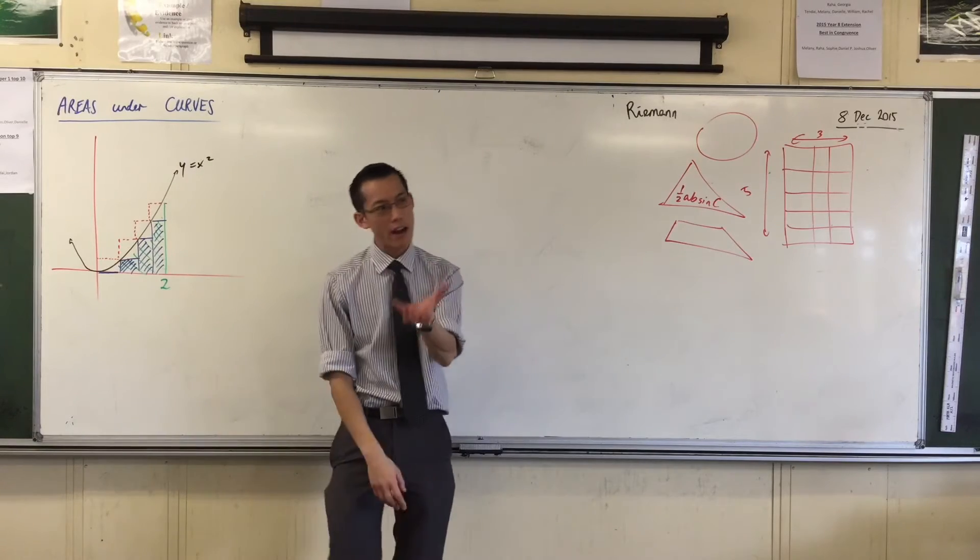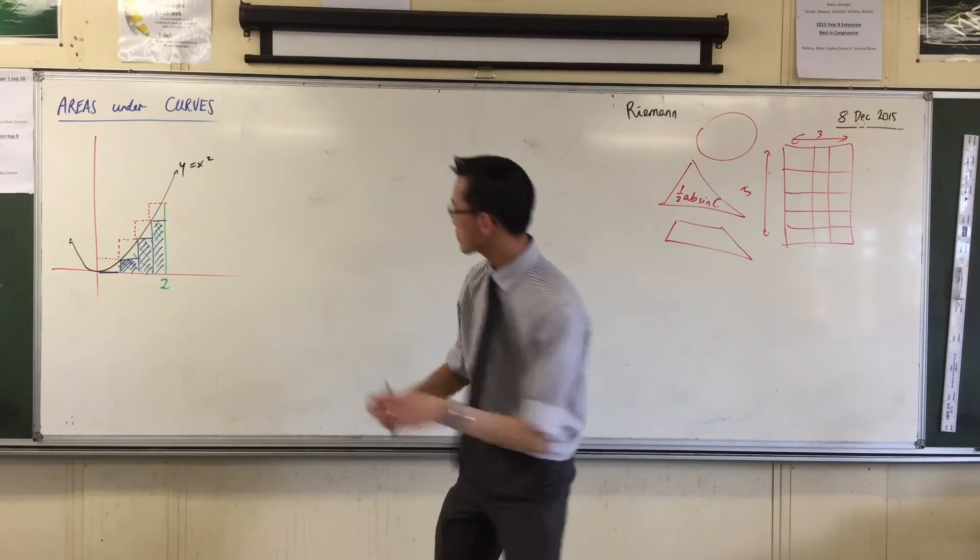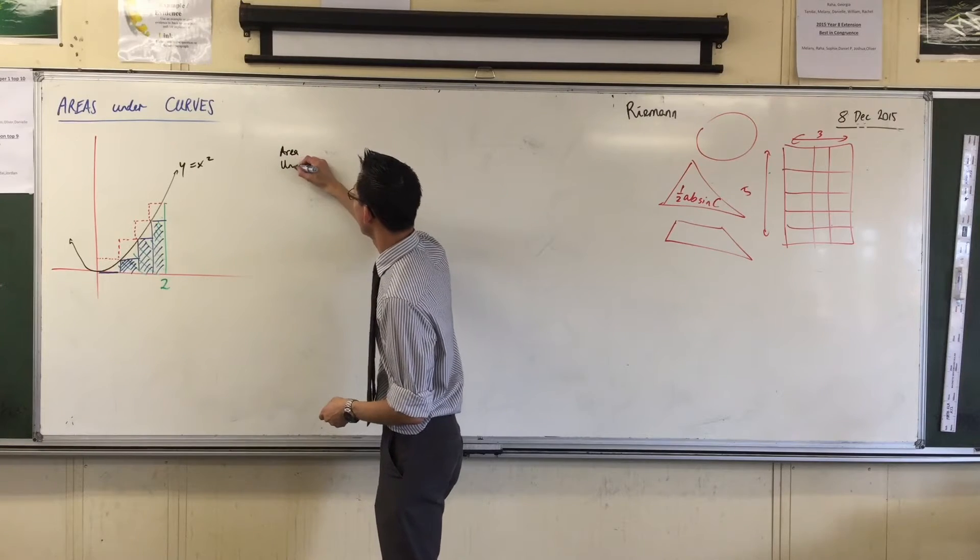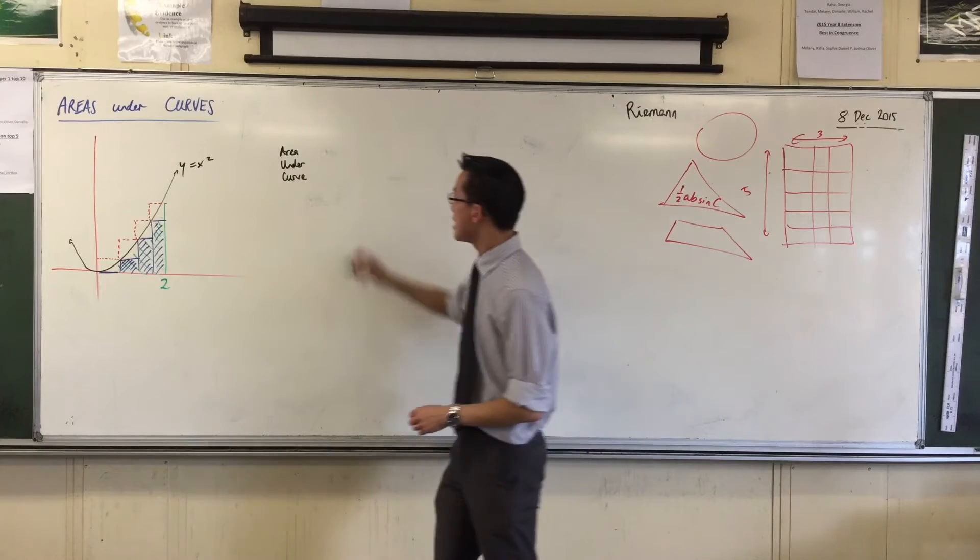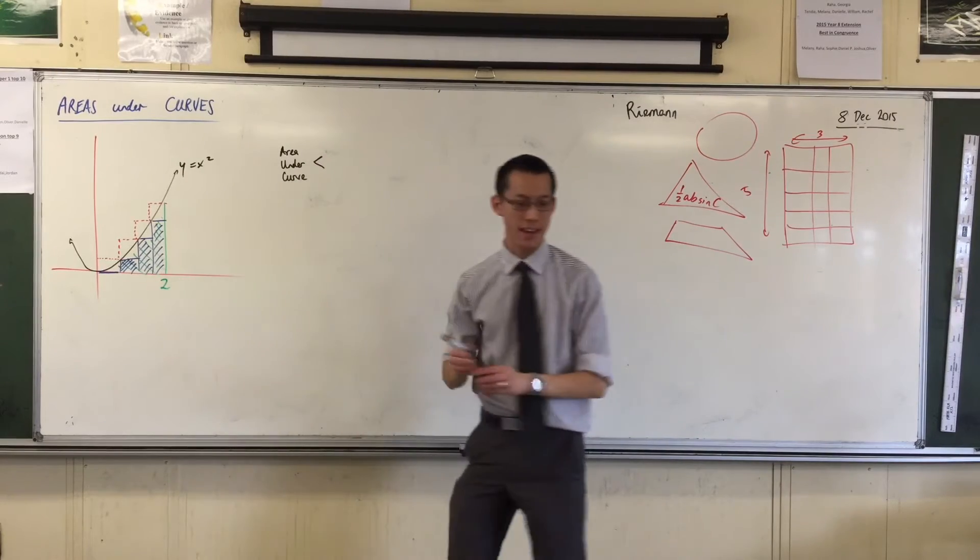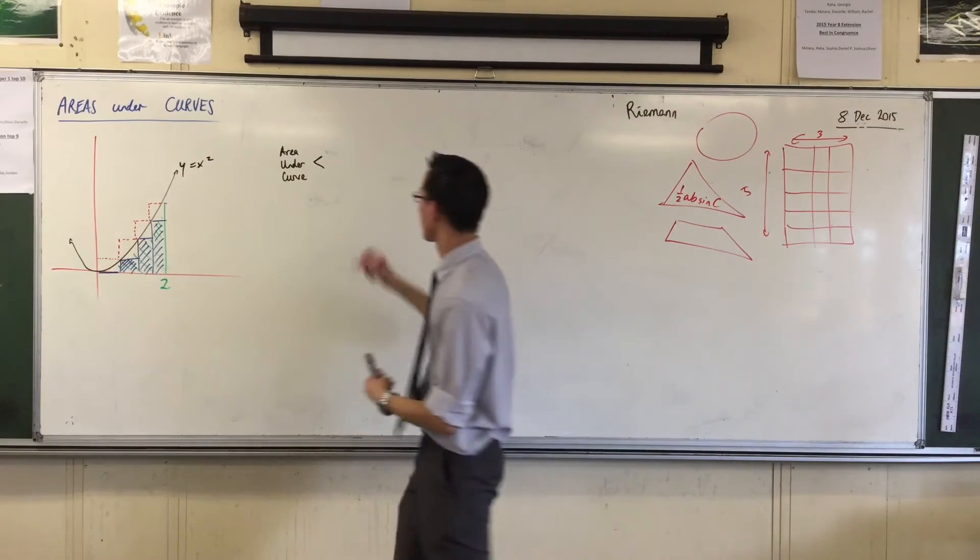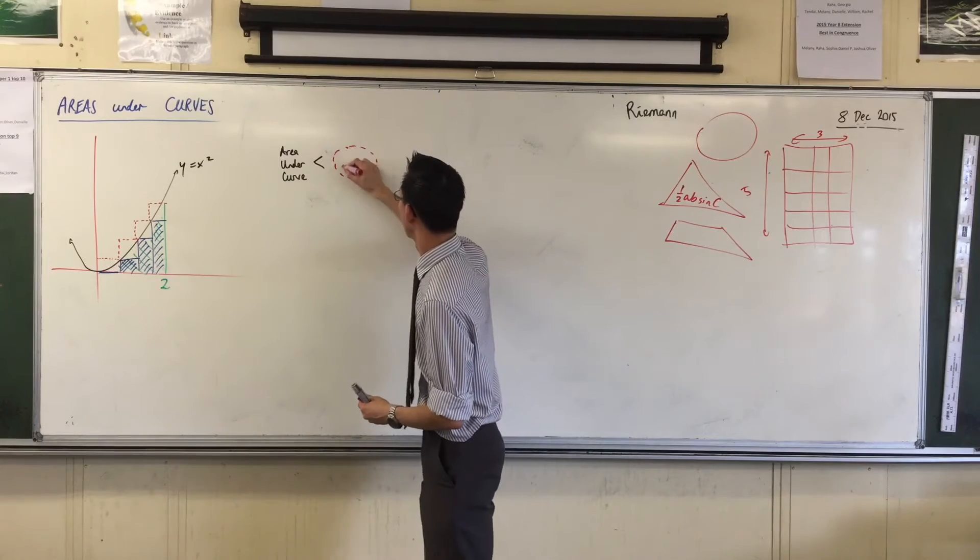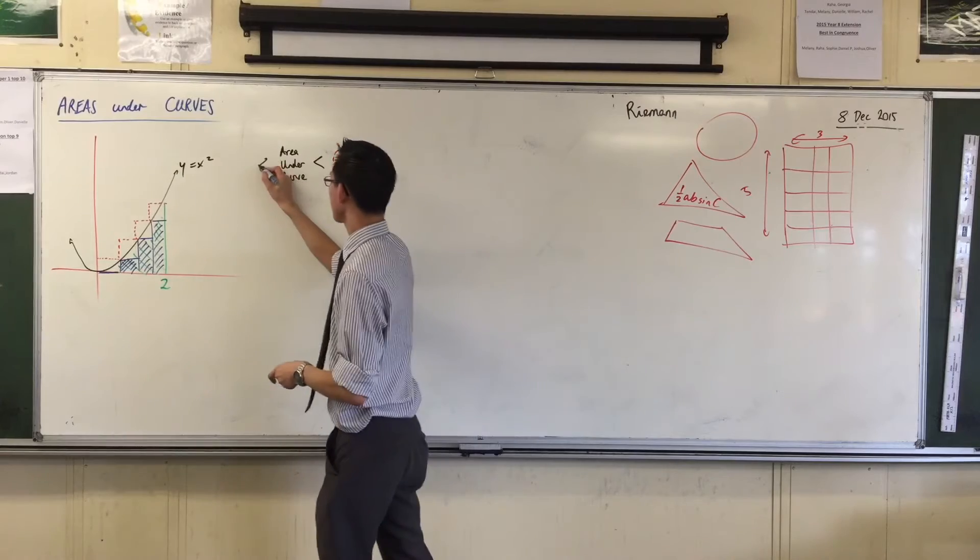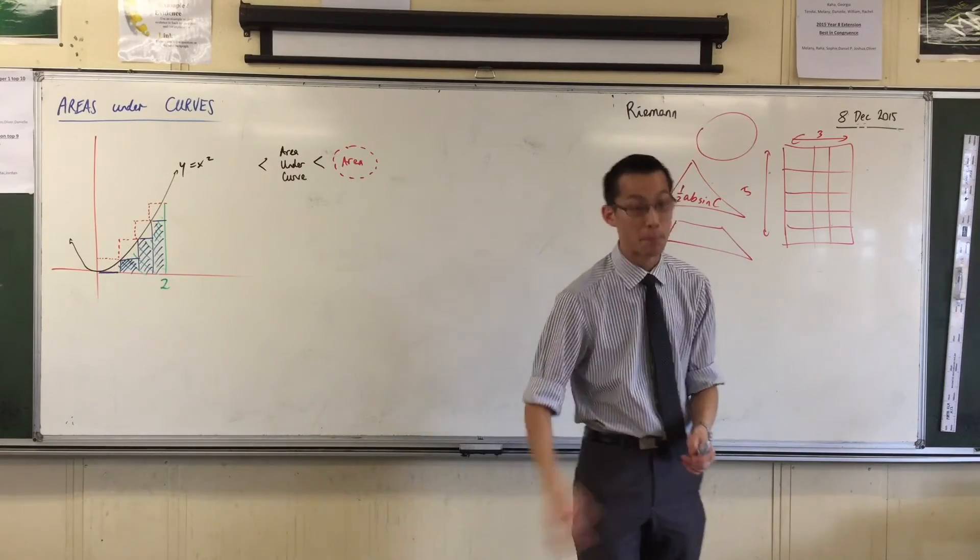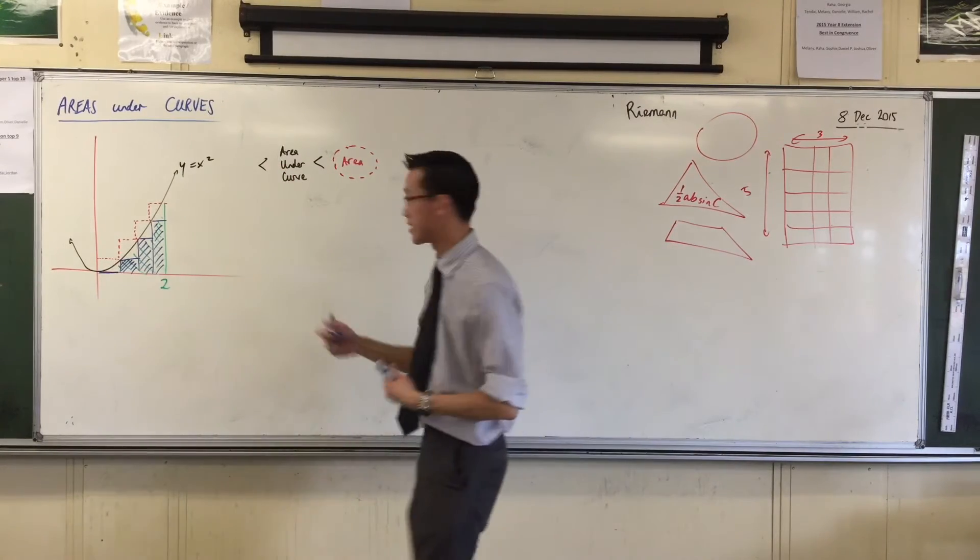So the actual area I want, I'm going to write it like this: Area under curve. It's going to be less than the red dotted area, and it's going to be more than the blue shaded area, those blue rectangles.